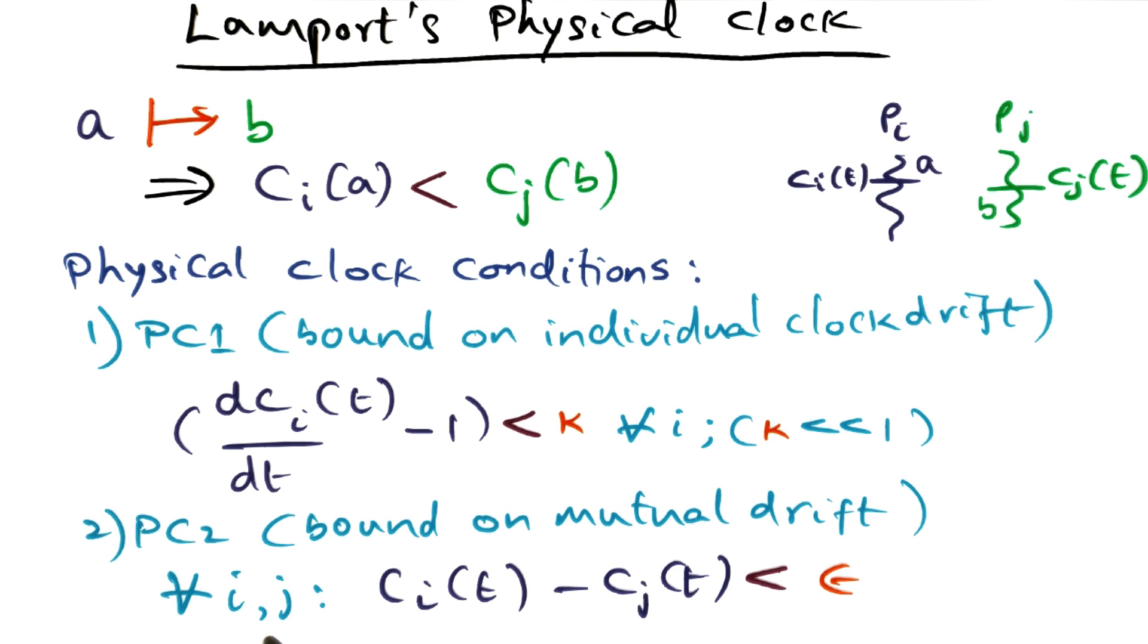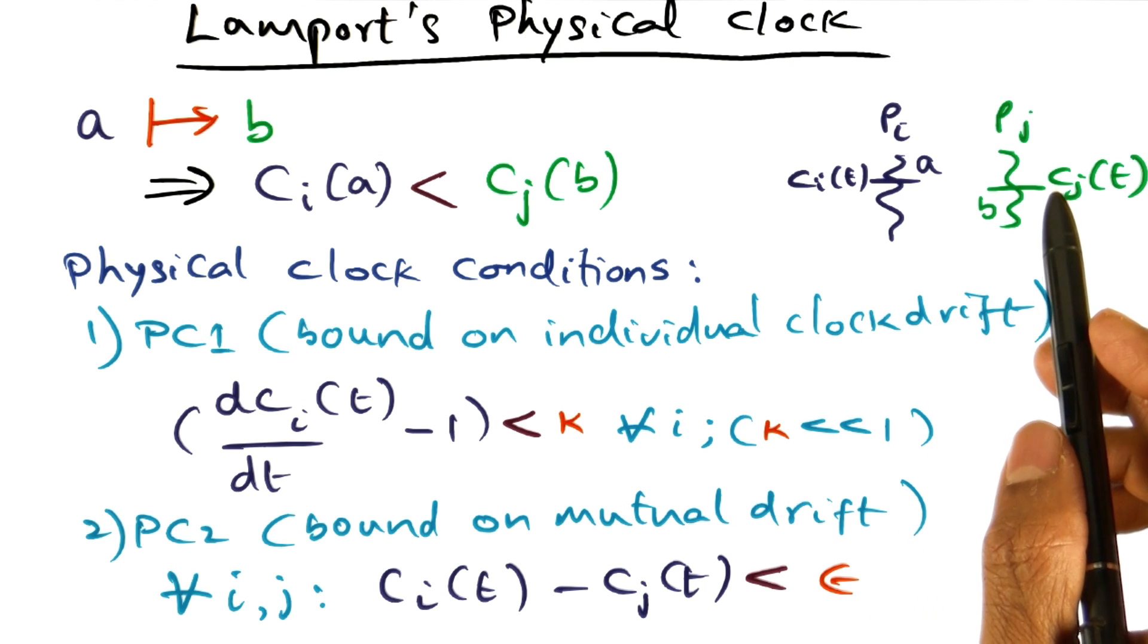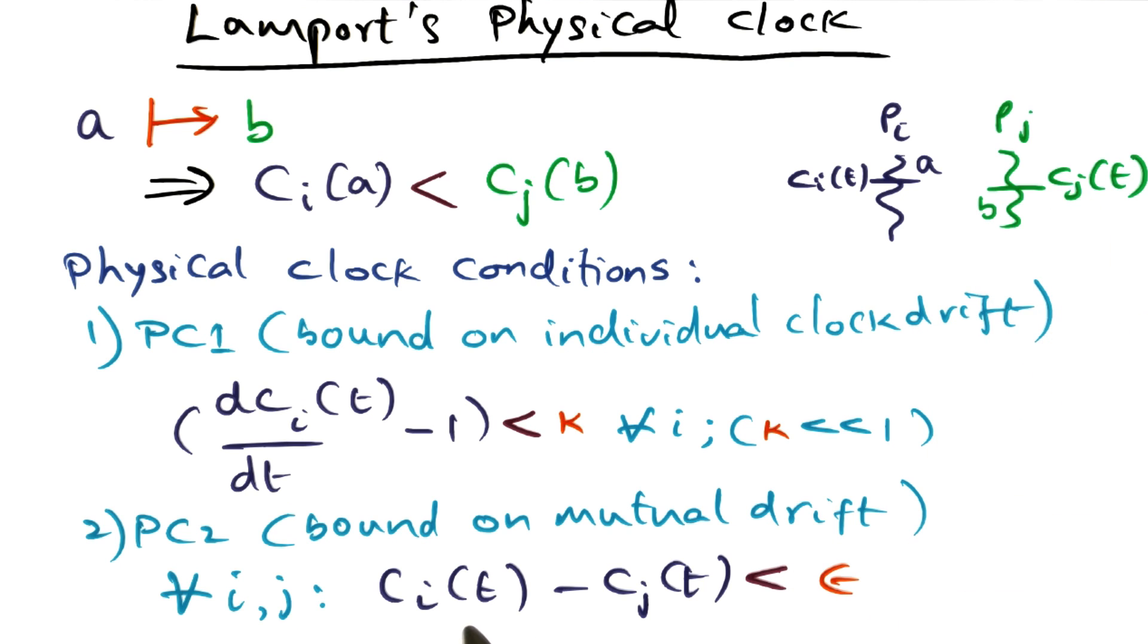So, that is captured in this condition saying that for all ij, any pair of nodes in the entire distributed system, the difference between the time that I read on my clock and the time that I read on somebody else's clock is very, very small. So this is the mutual clock drift.